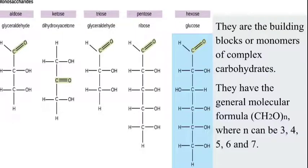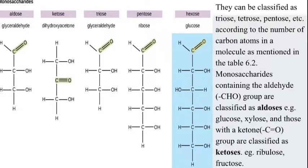Monosaccharides can be classified as trioses, tetroses, pentoses, and so on, according to the number of carbon atoms in the molecule, as mentioned in the table.